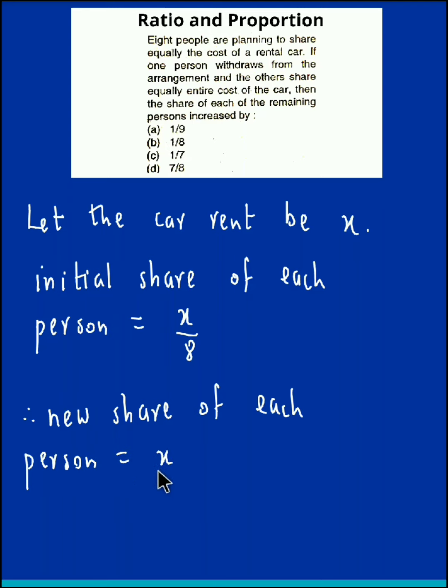Therefore, the increase in the share of each person would be the new share, that is x/7, minus the previous share, that is the initial share, x/8.